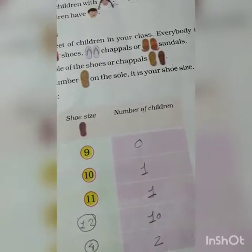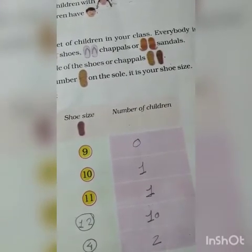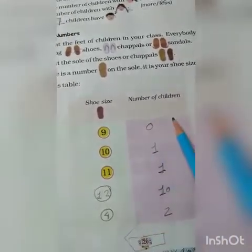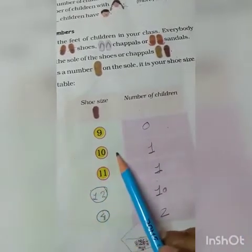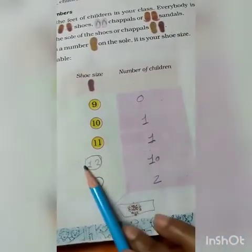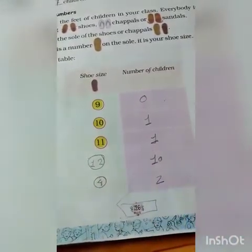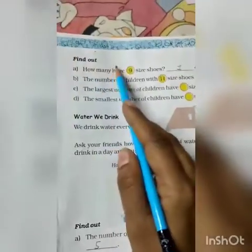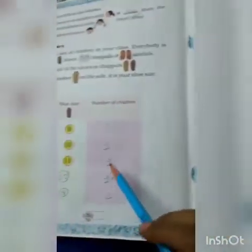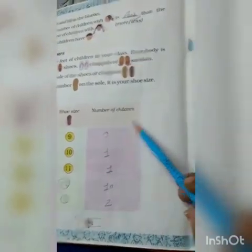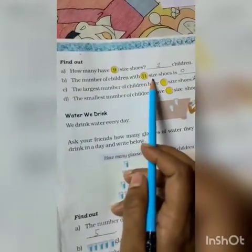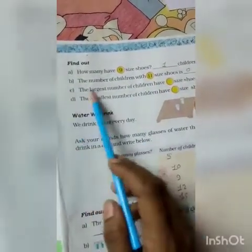You can do one thing: you can see the shoe size of your family and nearby friends. See the number of their size and write it down here. Size 9 — write the number of children here. Size 10 — write here. Size 11, size 12, and size 4 — you'll have to write in this box. Find out how many people wear size 9 shoes. If one person wears size 9 shoes, you will write the answer as one here.